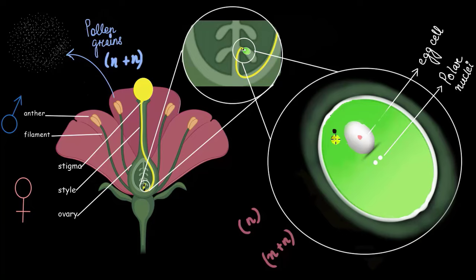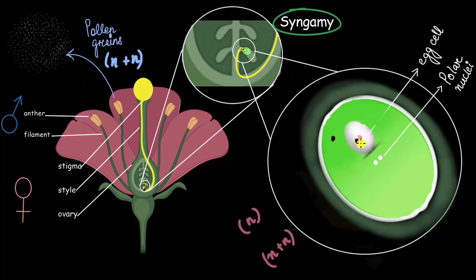One of the male nuclei moves towards the egg cell and fuses with the egg cell. This process is called fertilization or syngamy, where the male gamete and the female gamete fuse. And they fuse to give rise to a diploid zygote. We saw that male gamete and female gamete both haploid fused. Therefore, this zygote will be a diploid one. And this zygote later forms an embryo, and that embryo gives rise to a baby plant.